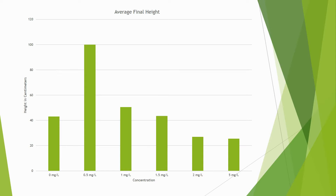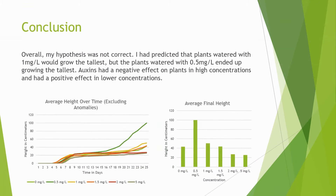Concentrations at and lower than 1.5 mg per liter result in plants with boosted heights and above-normal growth rates. Overall, my hypothesis was not correct. I had predicted that plants watered with 1 mg per liter would grow the tallest, but the plants watered with 0.5 mg per liter ended up growing the tallest. Auxins had a negative effect on plants in high concentrations and a positive effect in lower concentrations.